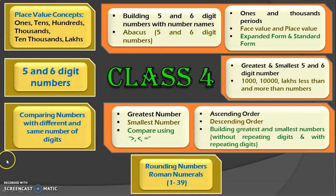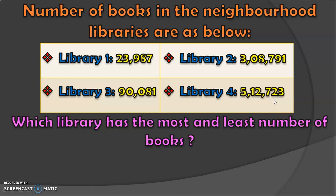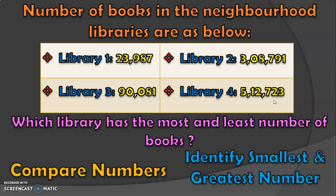Let us begin the session with an example. The number of books in the neighborhood libraries are given below. Library 1 has 23,987 books; library 2 has 3,08,791 books; library 3 has 90,081 books; and library 4 has 5,12,723 books. Which library has the most and least number of books? We cannot say it just by looking at them, so we need to compare the numbers to identify the smallest and greatest. At the end of the video, we will see the answer to this question.